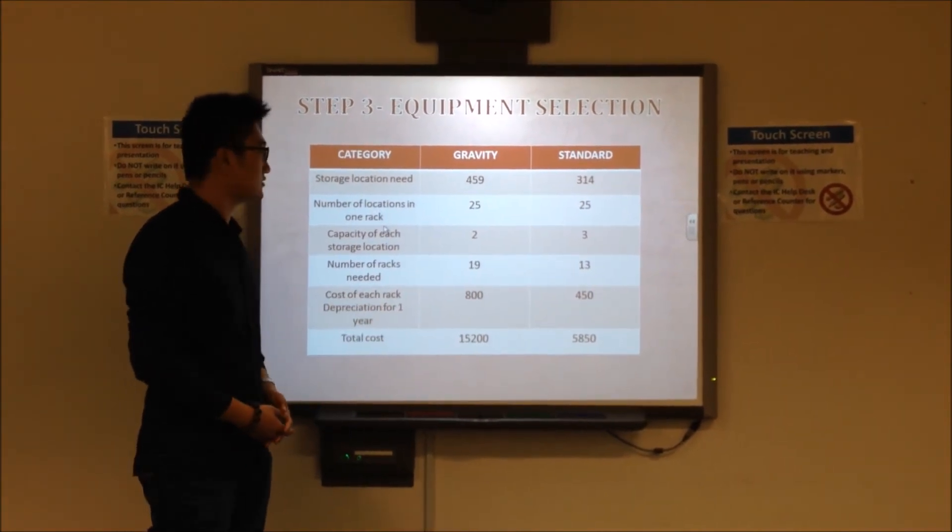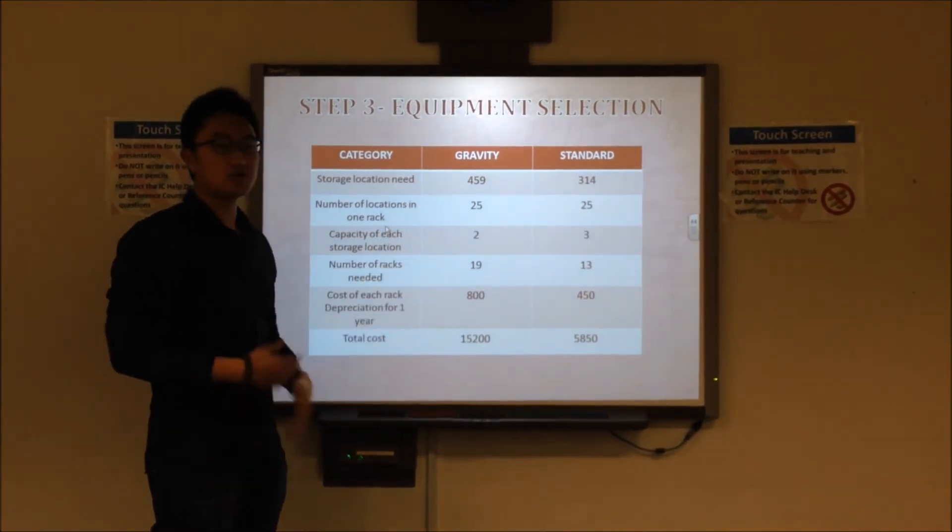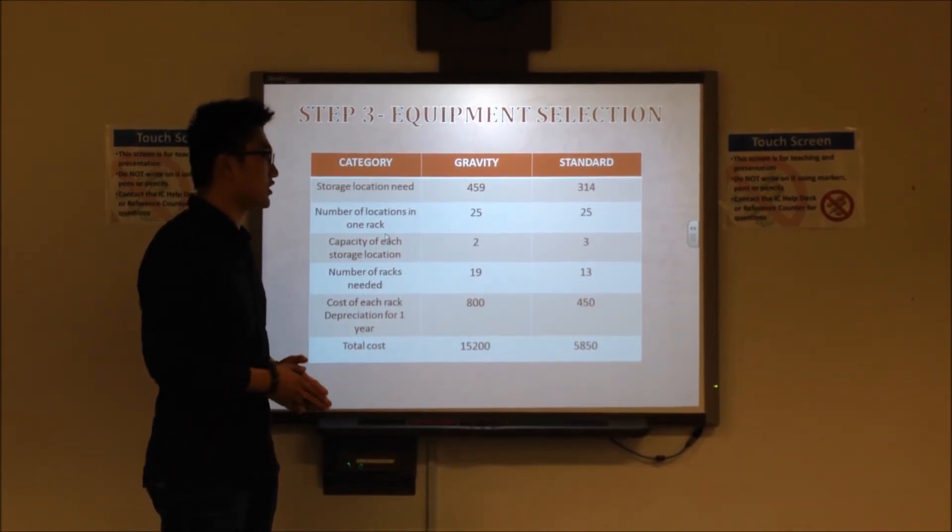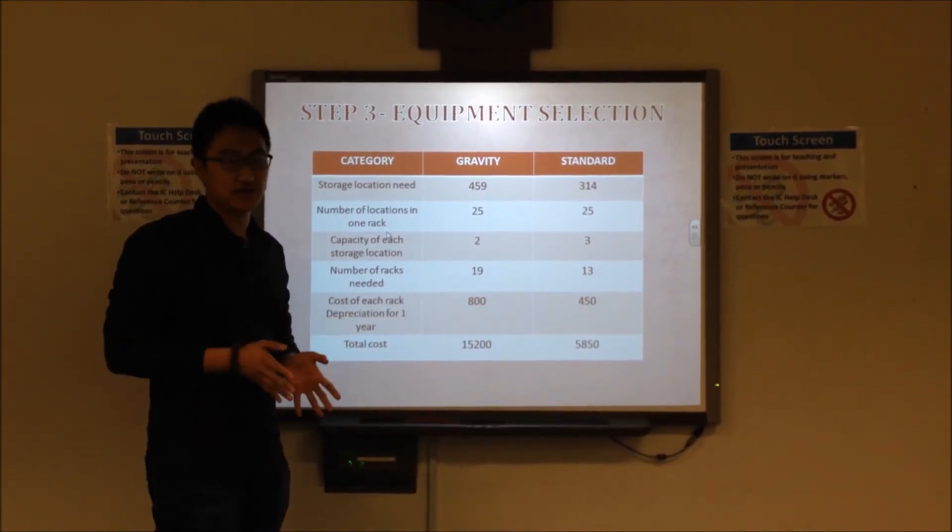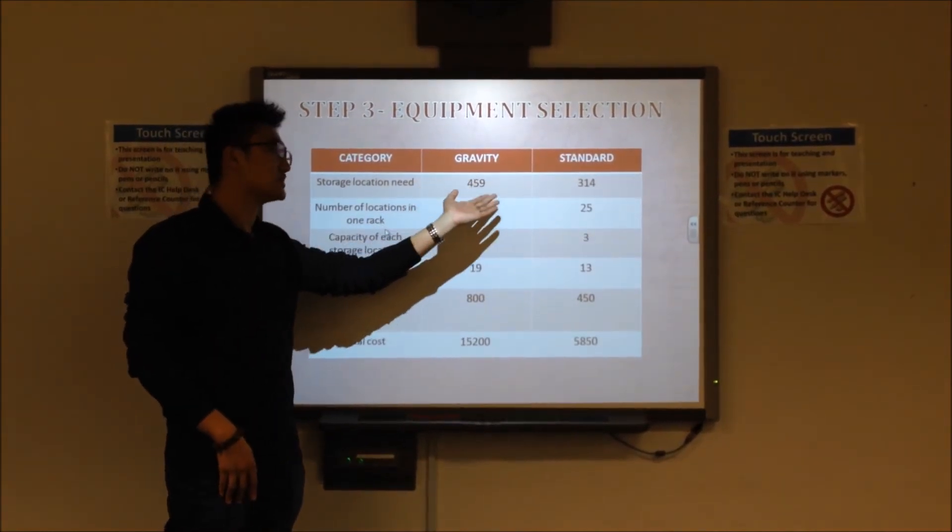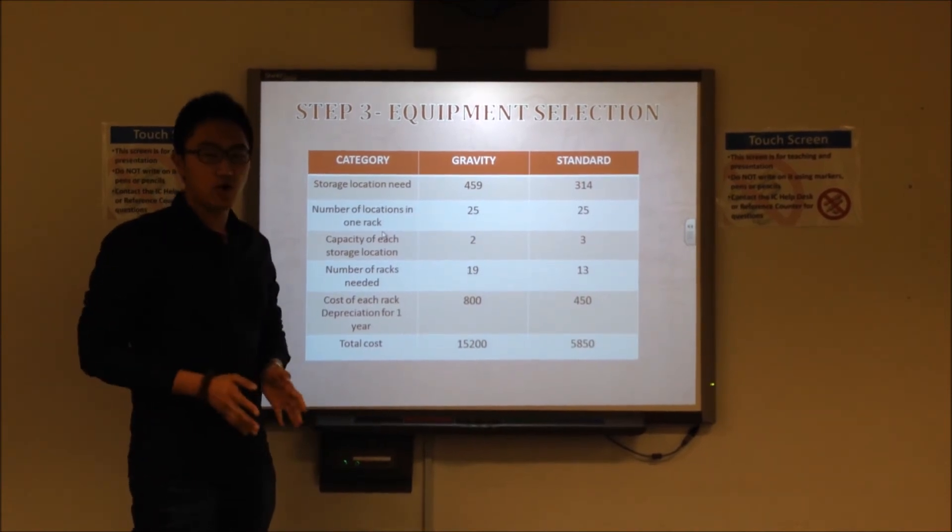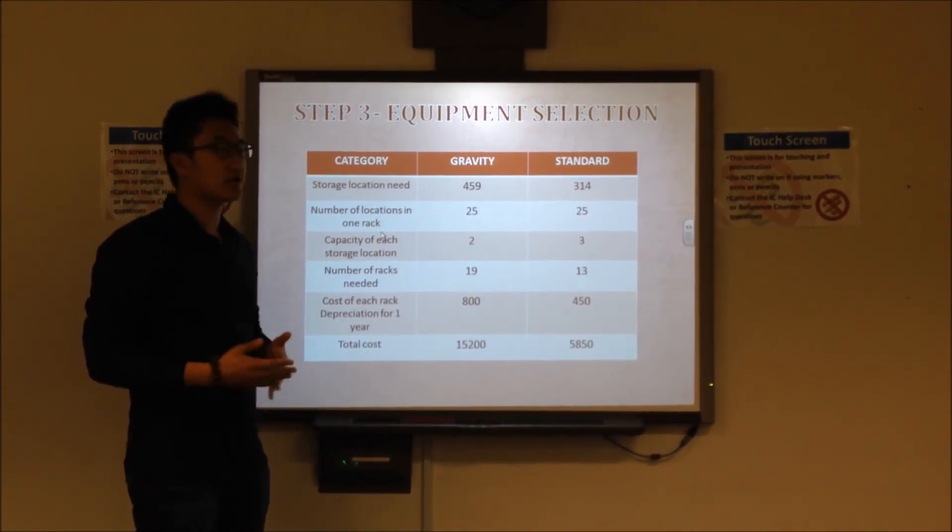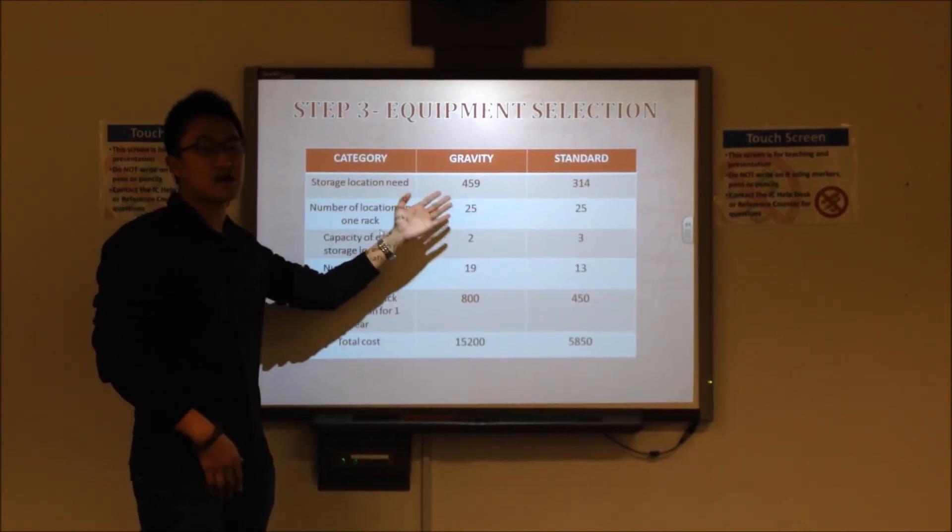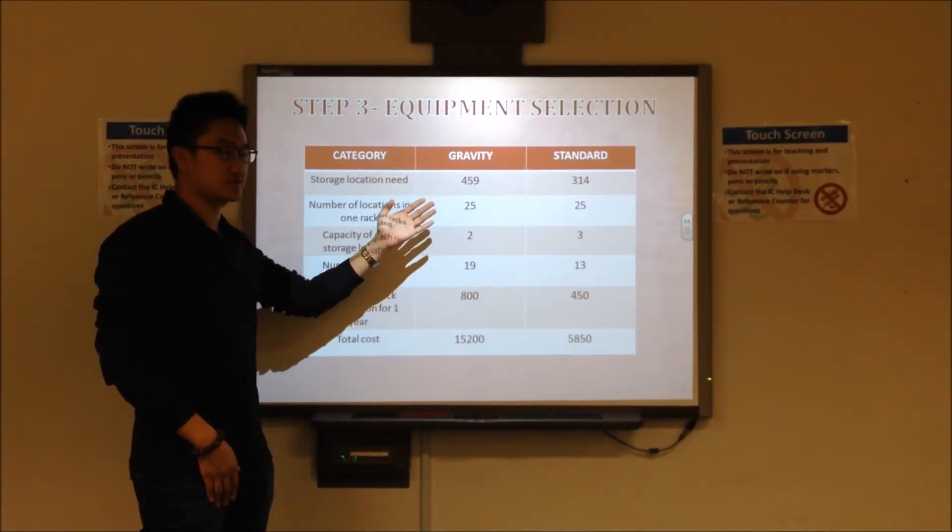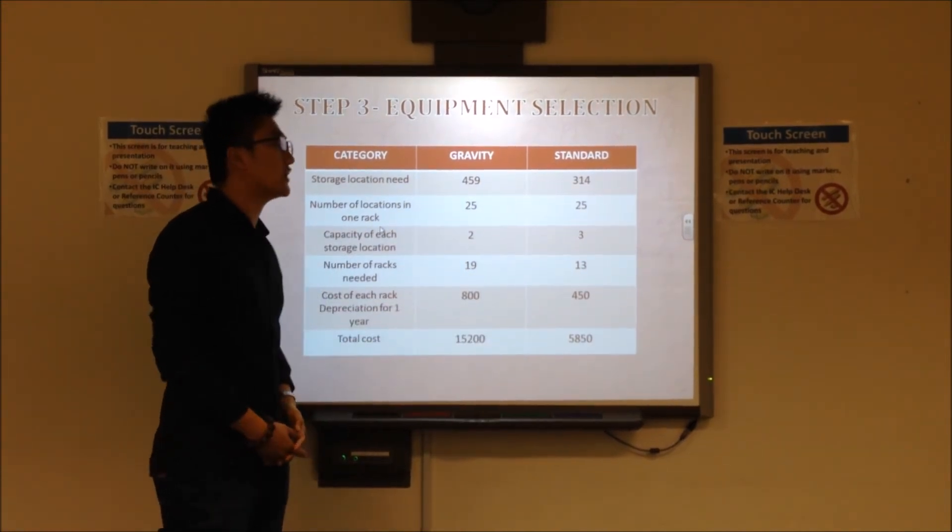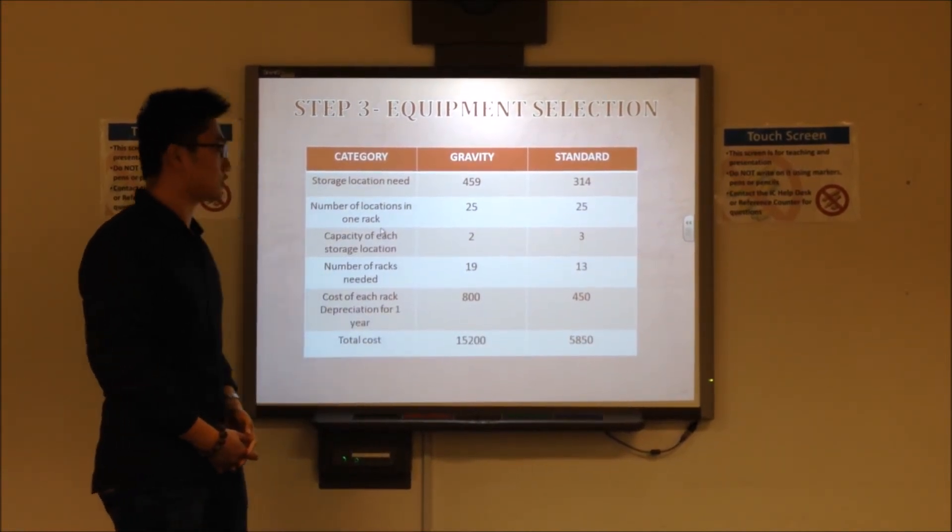We have two choices. In order to achieve our goal of management and save money, we need to think very carefully about costs for gravity rack costs and standard rack costs. After collecting all the data and analyzing all the data from previous steps, we can know that we need 459 locations for the gravity rack. But if we choose standard rack, we need 314 storage locations.